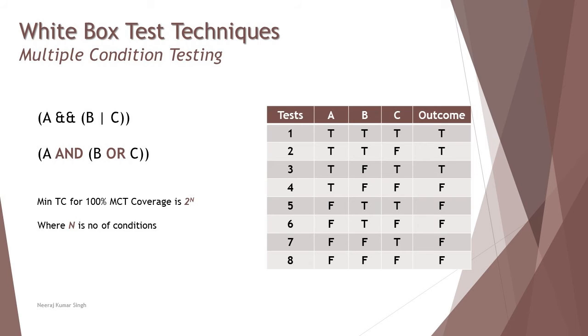If you shear this down to a minimum number of test cases using n plus 1, where n is the number of conditions, you call it Modified Condition Decision Coverage.